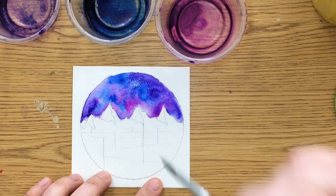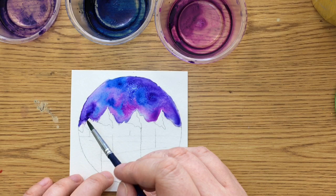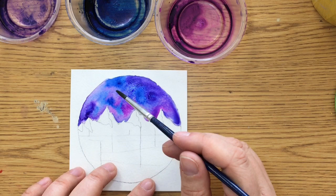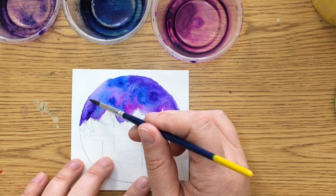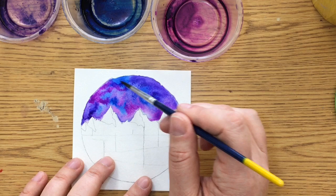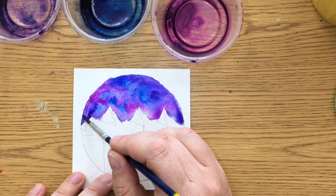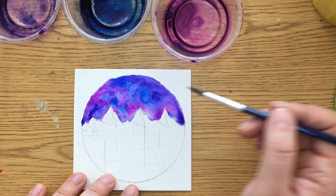Now the cool thing about watercolors is you can kind of work at it in layers. So I've covered the whole sky right now but if I wanted to I could go back on top and create another layer of color, which I could do right now while it's still wet. While it's still wet though the colors are going to keep mixing, which is fine if that's what I want it to look like. So if I go back over here I can mix in some more color. But you could also wait and do it after it's already dried. That's kind of up to you.